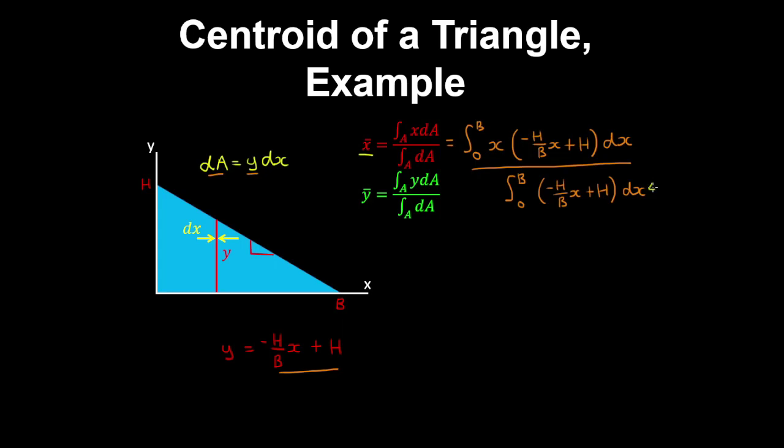Now we know this integral here is going to evaluate to bh on 2, which you can verify as the area of this triangle. And now if we evaluate the integral in the numerator, we have minus h on b by x squared, so that would be x cubed on 3, and then plus h by x squared on 2. And we evaluate this from 0 to b.